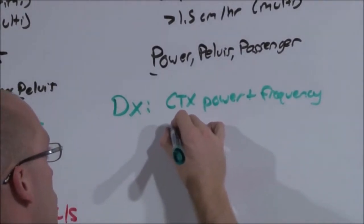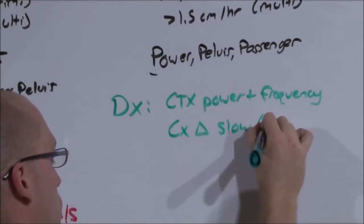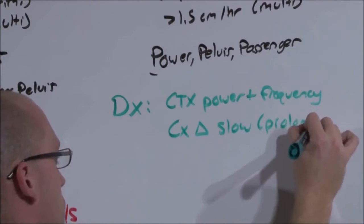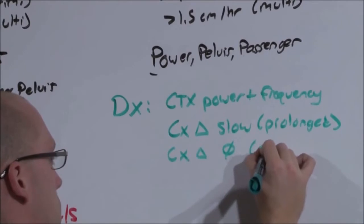But now you're also going to assess how fast she is opening up. If she has cervical dilation, cervical changes that are simply slowed, she's prolonged. If she has no cervical change at all, she is arrested.